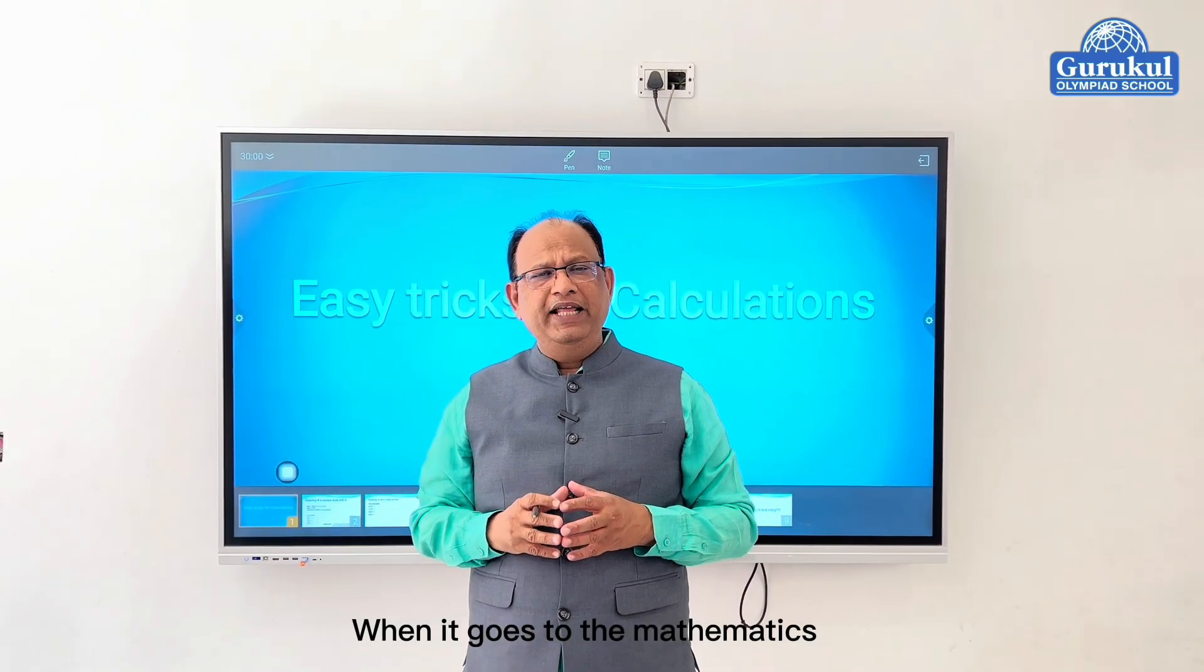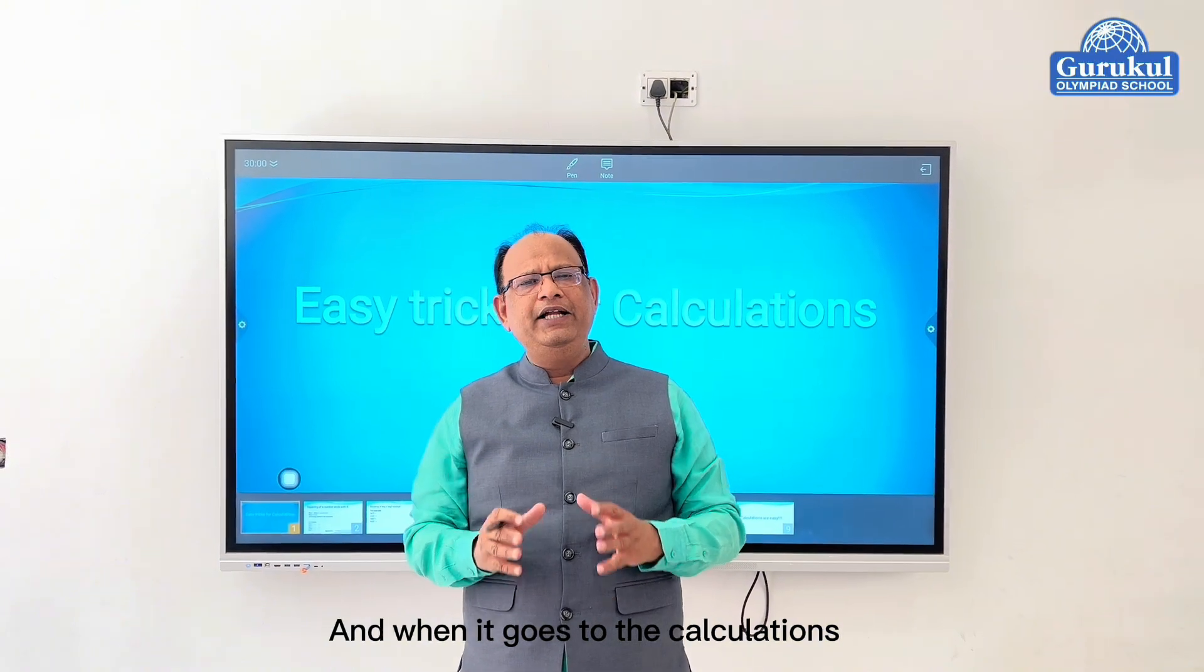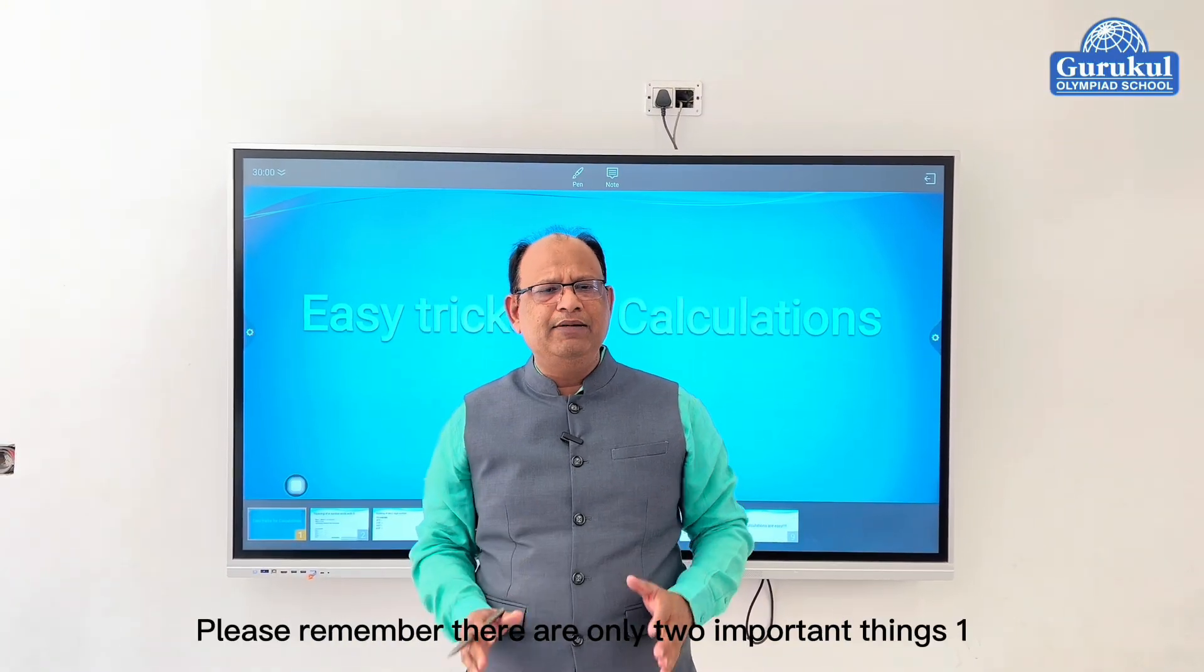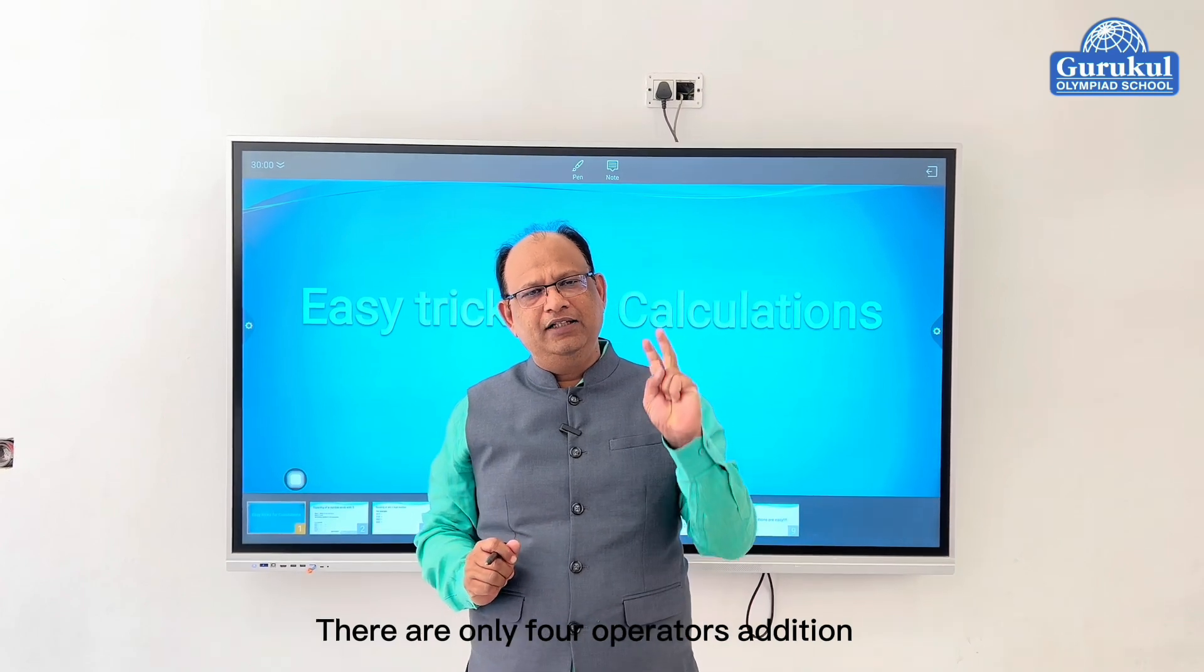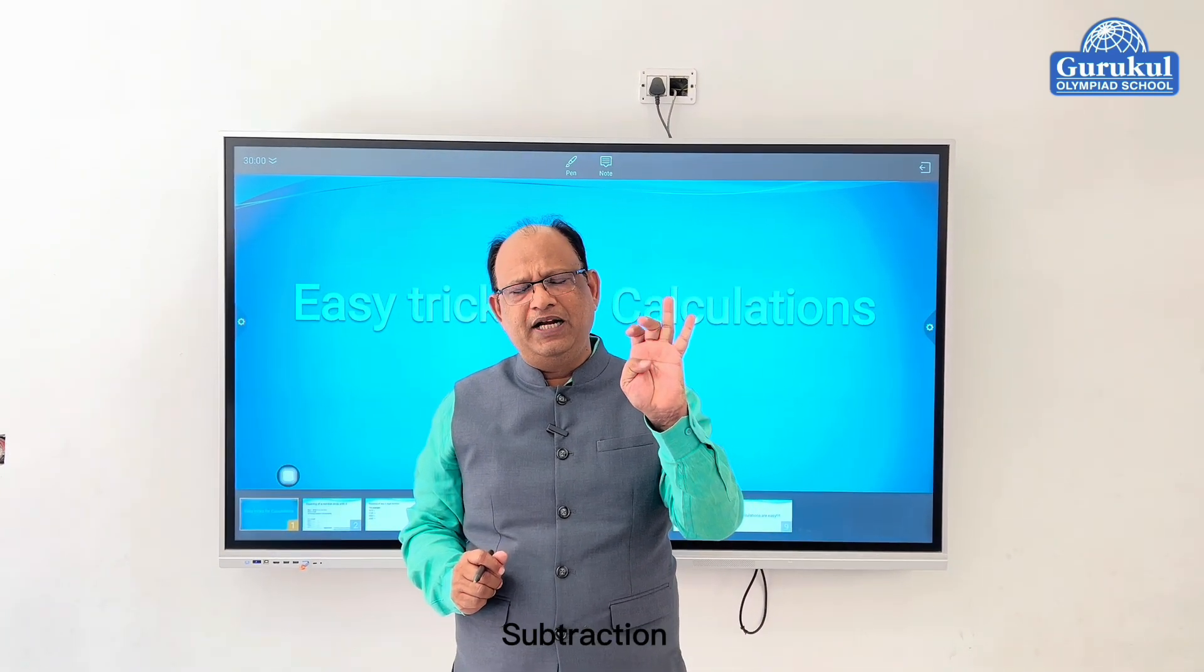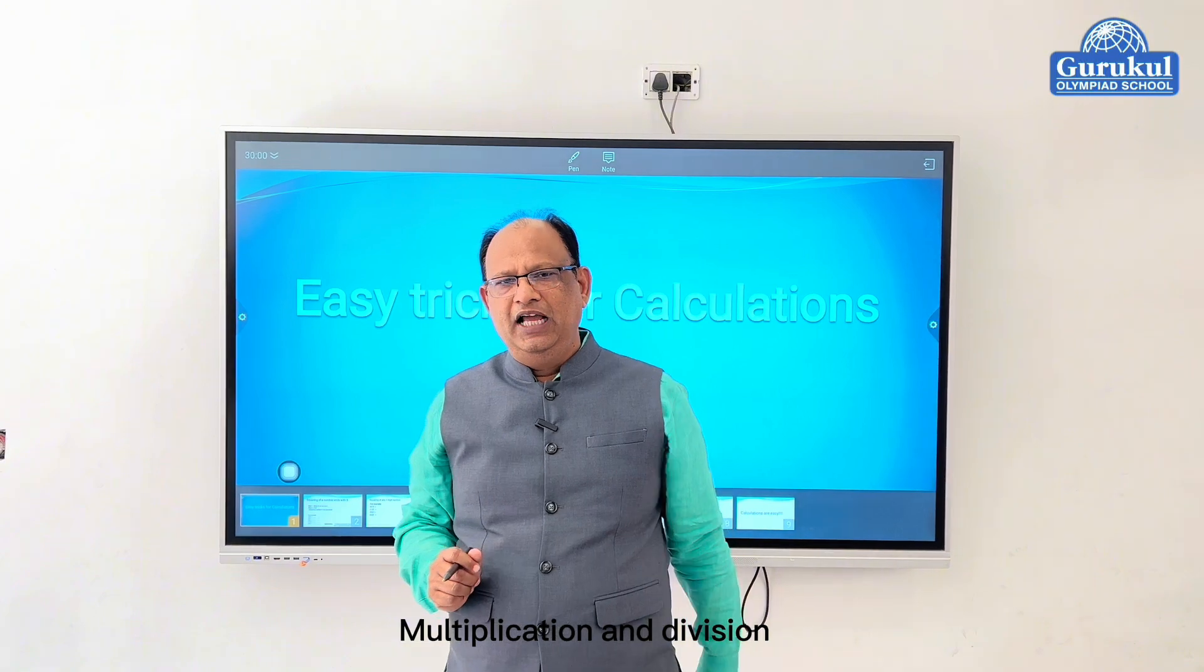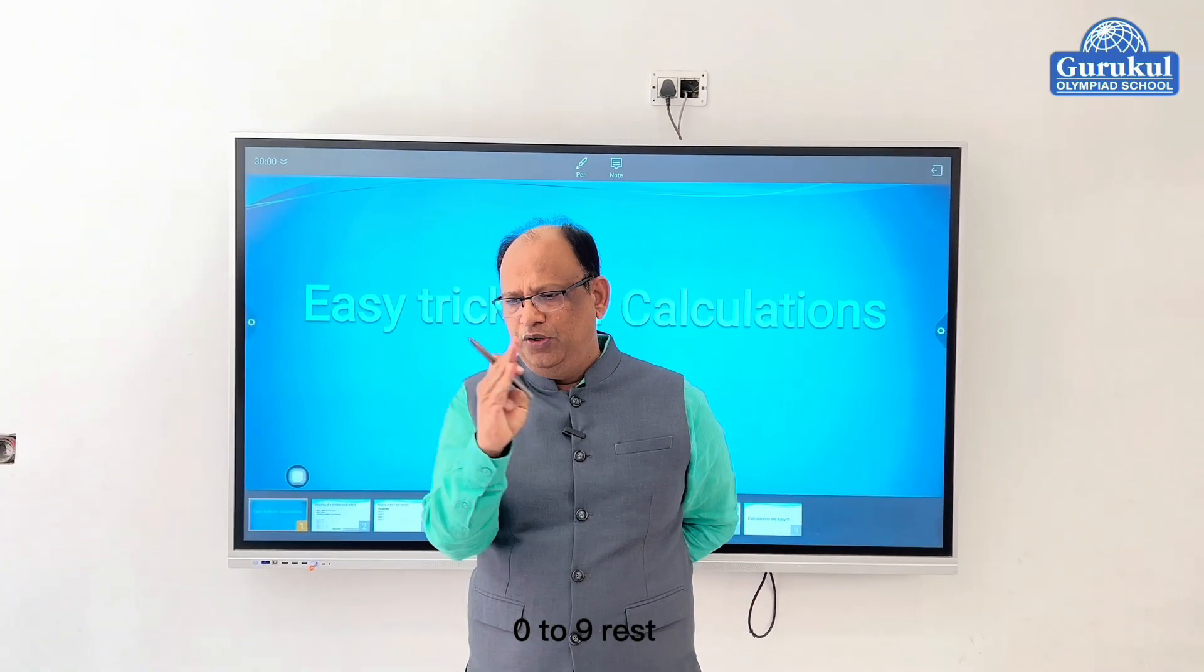When it goes to mathematics and calculations, please remember there are only two important things. One, there are only four operators: addition, subtraction, multiplication and division. And there are ten digits, zero to nine.